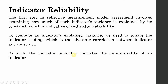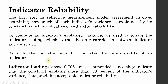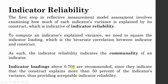The indicator reliability indicates the commonality of the indicator. Indicator loadings above 0.708 are recommended, since they indicate that the construct explains more than 50% of the indicator's variance, providing an acceptable indicator reliability.